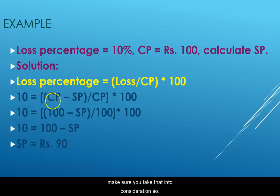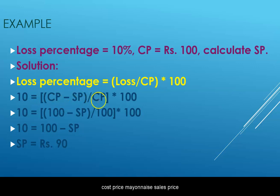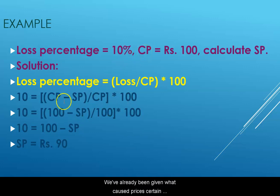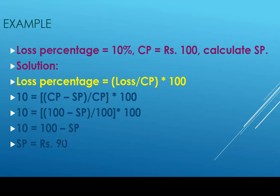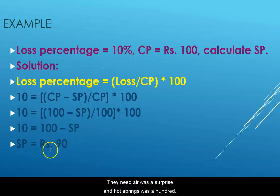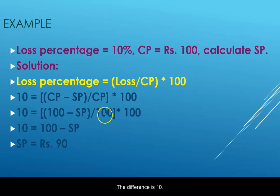After inserting the numbers: ten equals one hundred minus sales price divided by one hundred, times one hundred. The two hundreds cancel out and we're left with sale price equals ninety. To verify: the sale price is ninety and the cost price was one hundred, so the difference is ten, and the loss percentage becomes ten percent — which matches what we were given.